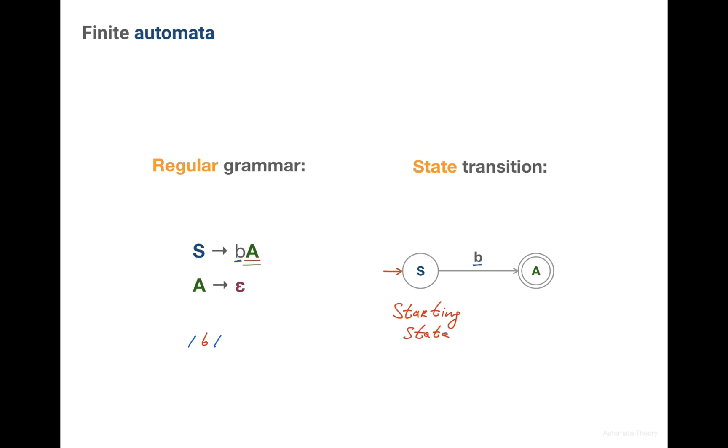The destination state in this case is double-circled. Such states are known as acceptance states. What this means, if when traversing this graph we end up in one of the acceptance states, the string is accepted.